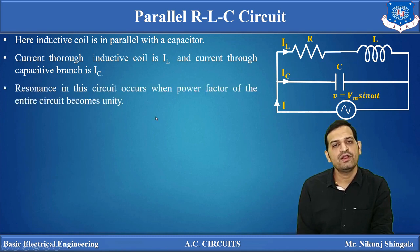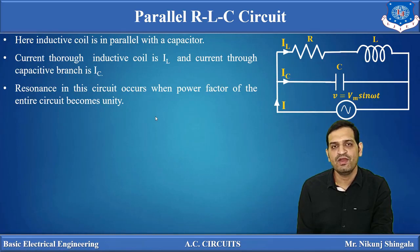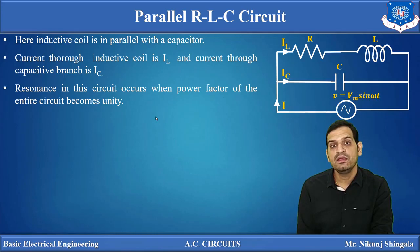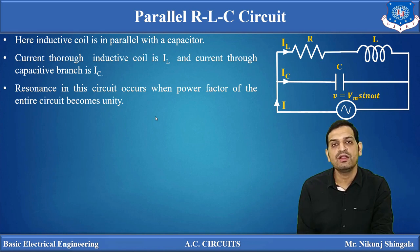We have to determine the condition of resonance. We know resonance occurs in this circuit whenever the power factor of the circuit becomes unity. Power factor becomes unity when the total voltage and resultant current are in phase. So, we have to determine the condition where V and I become in phase.